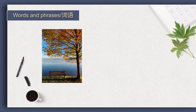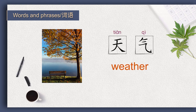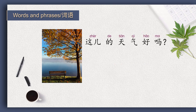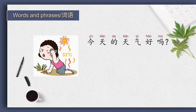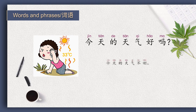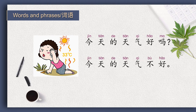Living in the city, we often care about the weather. 'Weather' in Chinese is 天气。 这儿的天气好吗？ 这儿的天气很好。 今天的天气好吗？ 今天的天气不好。